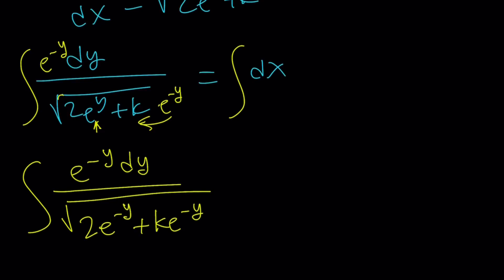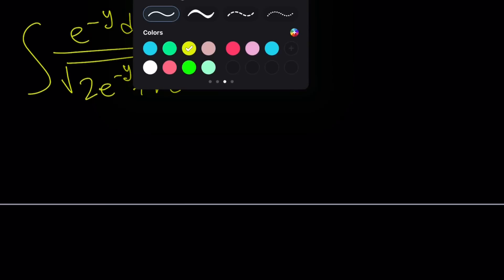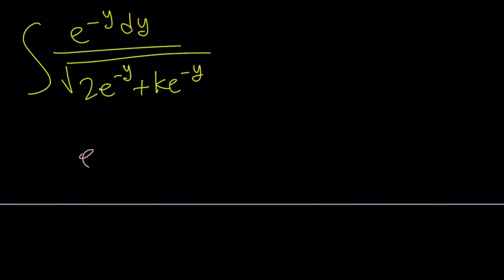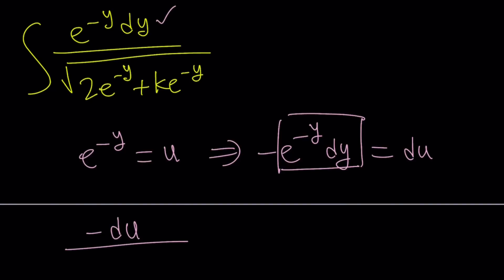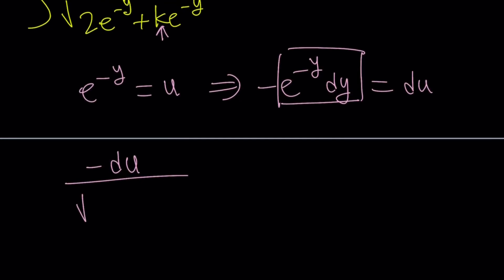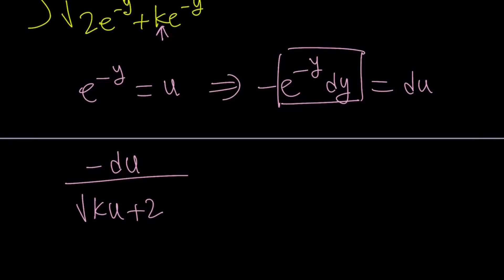Let me handle this all the way through. We're going to use the power of substitution — set e to the power negative y equal to u. Then differentiating both sides, you get negative e to the power negative y dy equals du. So the numerator becomes negative du, and the denominator at the bottom I want to write as the square root of k times u squared plus 2u. Actually, let me double-check: it's k times e to the power negative 2y, since e to the negative y inside gives e to the negative 2y.